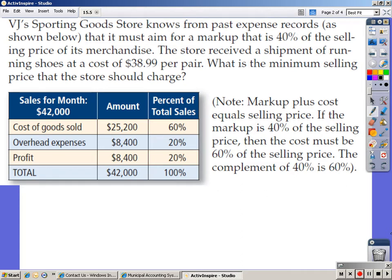Note the markup plus cost equals selling price. If the markup is 40% of the selling price, then the cost must be 60% of the selling price because the complement of 40 is 60.